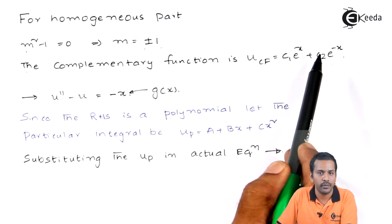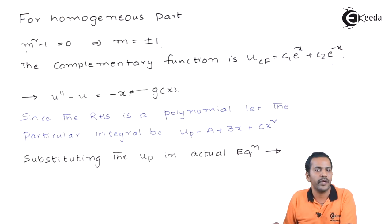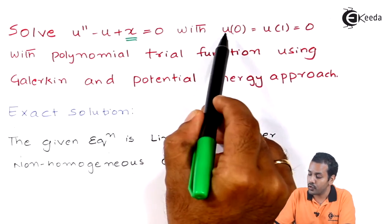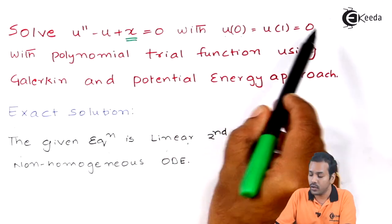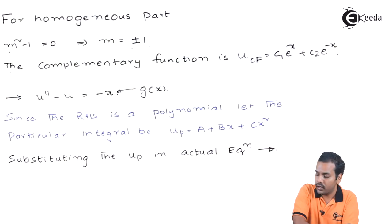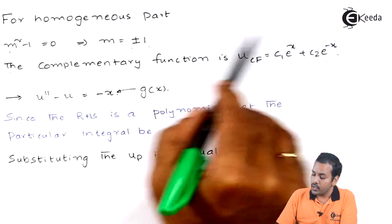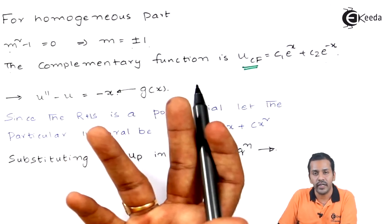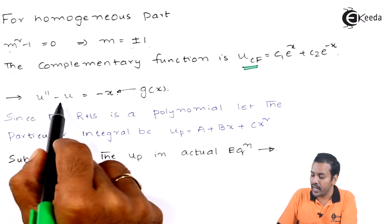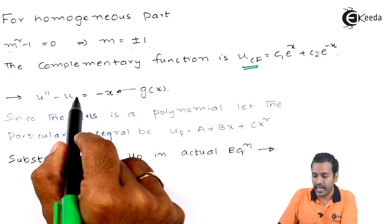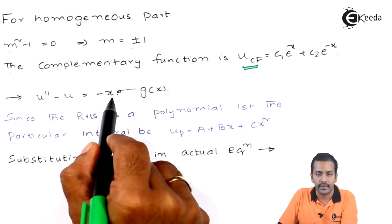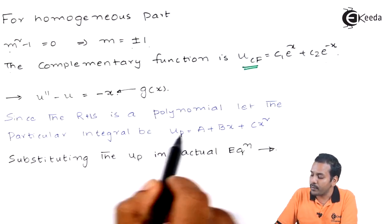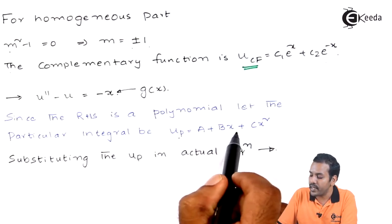Where c1 and c2 are constants to be found from the boundary conditions u(0) = u(1) = 0. With these two boundary conditions we need to solve for c1 and c2. The complementary function is one part of the solution. For the particular integral, we bring the x term to the right hand side to get minus x, which is a polynomial. So we can assume the particular integral is of the form u_p = a + bx + cx squared.